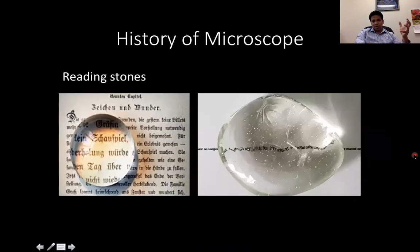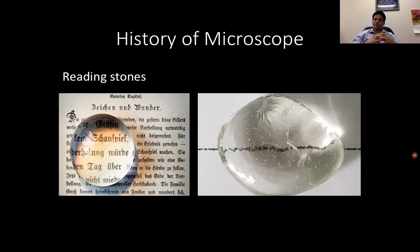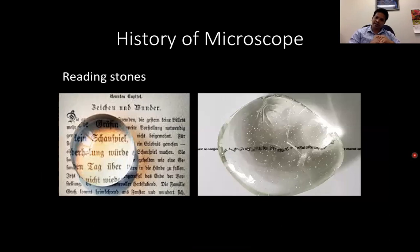That was the property of light. The reason I wanted to go over it again is because this is important to understand the light source while working with different microscopic techniques. When you are working on your experiment and you're not sure which microscopic technique to use, this understanding is going to help you select the appropriate technique for your experiment.